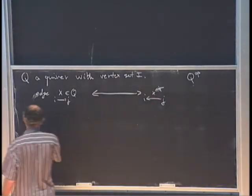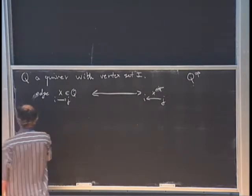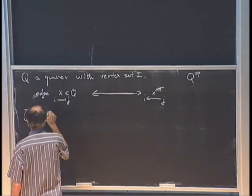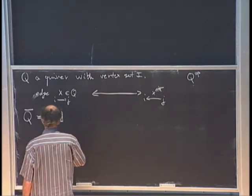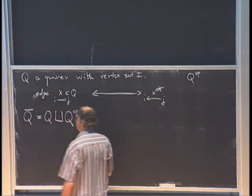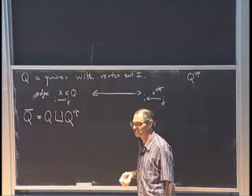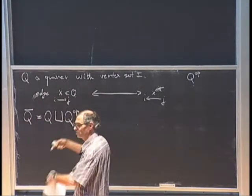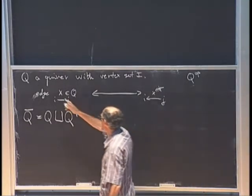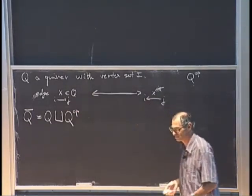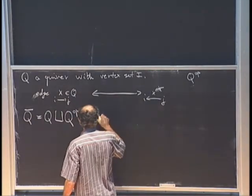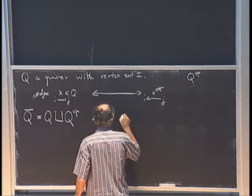The double quiver Q-bar is the union of Q and Q-opposite in the sense that the vertices are the same, but you take arrows in both directions — both the x's and the x-stars.